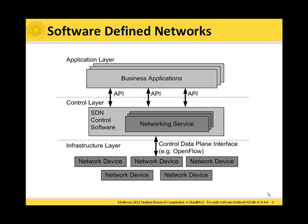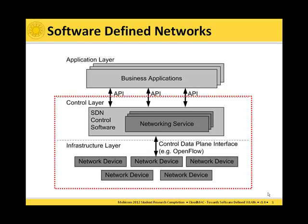The networking devices are programmed by networking services located on the control layer. The networking services themselves provide APIs to business applications. For example, a business application could issue a request to networking services to provide a certain end-to-end quality of service. The networking services translate this request into specific network configurations implemented using the OpenFlow protocol. With CloudMac, we mainly focus on the control layer and the infrastructure layer.